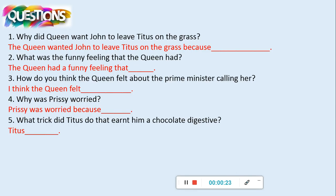Okay, so number one, why did the Queen want John to leave Titus on the grass? What was the funny feeling that the Queen had? How do you think the Queen felt about the Prime Minister calling her? Why was Prissy worried? What trick did Titus do that earned him a chocolate digestive? Pause me now while you have a go at these and come back when you are ready.